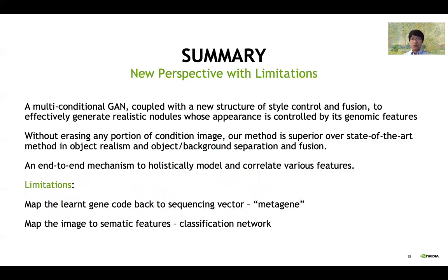In summary, our approach opens a new perspective beyond the common practice. The end-to-end framework removes the need for handcrafted features and arbitrary clustering for finding relationships between image and genetic data. It can provide not only an effective and controllable means to generate diverse nodules, but also a discriminative radiogenomic map linking genomic and image features. Of course, this study is quite preliminary with a limited amount of data. There are also a couple of missing links from the sequencing data to image features: first, how to map the learned gene code back to the sequencing vector, and second, how to map the image to semantic features. So there are still many unanswered questions. Conducting a study to make a clinically convincing case will be a long journey. Hopefully with this paper, we give some inspiration to our community about what we can do with radiogenomics using deep learning. Thank you for listening.